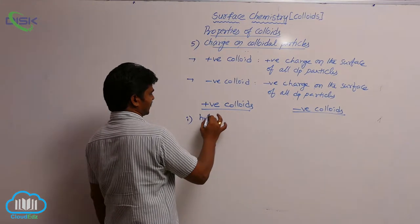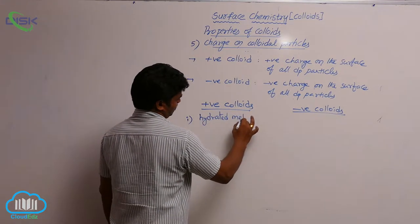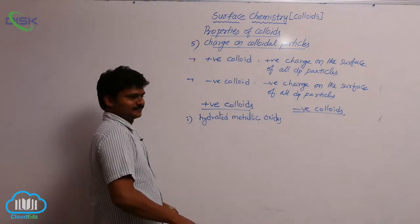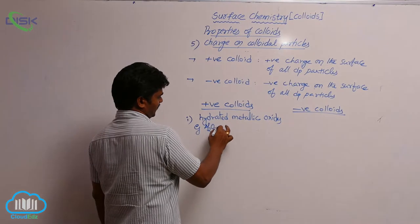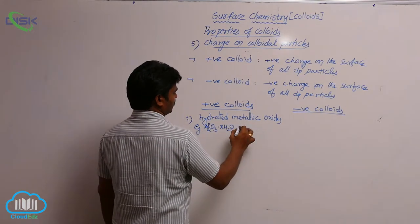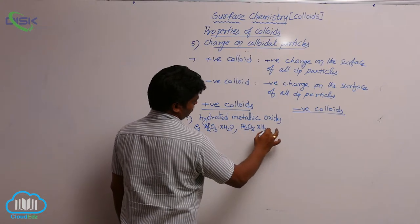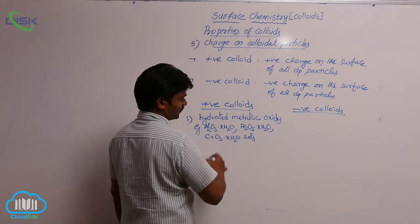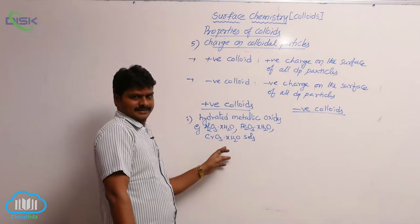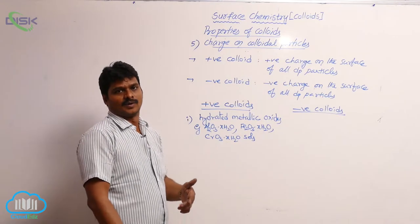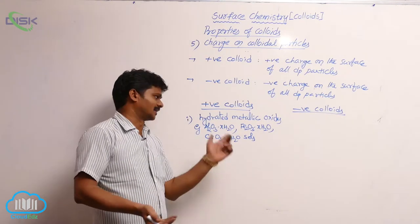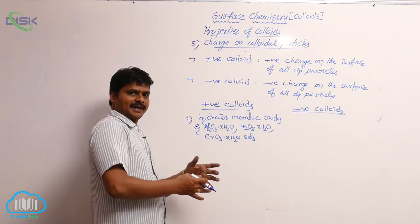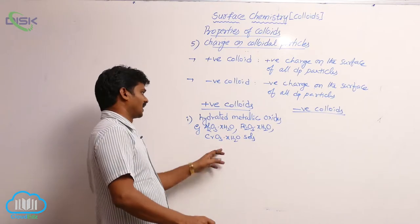For positive colloids: hydrated metallic oxides are positive colloids in water. Examples include Al₂O₃·xH₂O, Fe₂O₃·xH₂O, and CrO₃·xH₂O. Here x is the number of water molecules of crystallization, which may vary depending on the nature of the salt. These dispersed phase particles form positive colloids when placed in water.